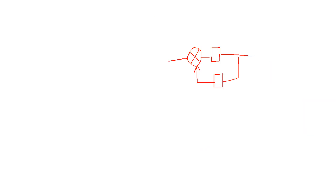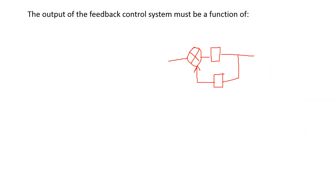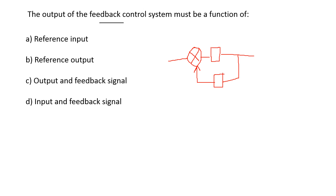Next: the output of the feedback control system must be a function of — options are: reference input, reference output, output and feedback signal, input and feedback signal. In a closed loop control system, the output is a function of both the reference input and the feedback signal. So option D is the right answer.